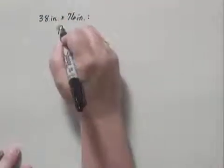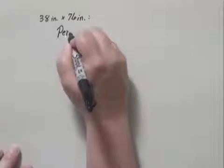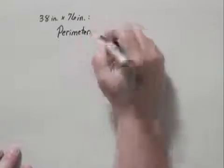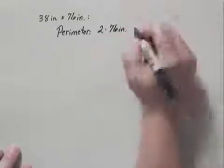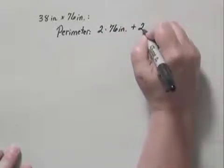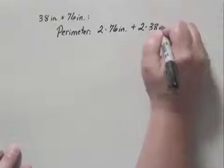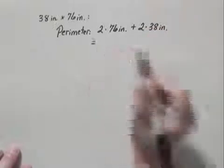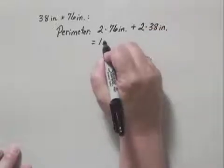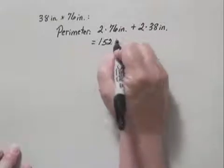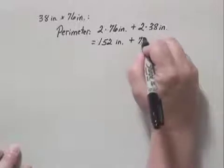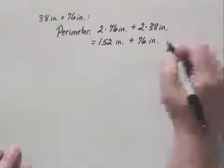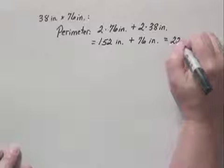The perimeter was 2 times the length, which is 2 times 76 inches plus 2 times the width, which is 2 times 38 inches. And that is 152 inches plus 76 inches, which gives us a perimeter of 228 inches.